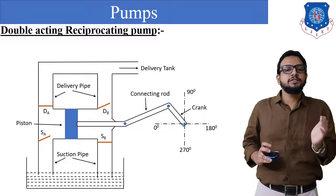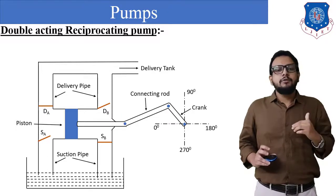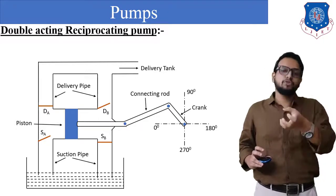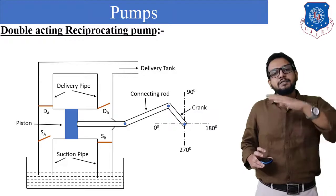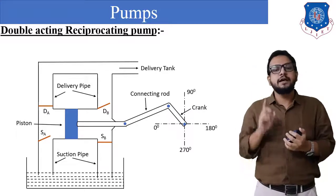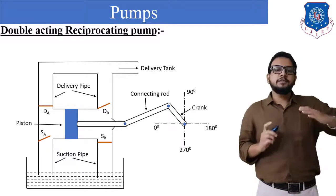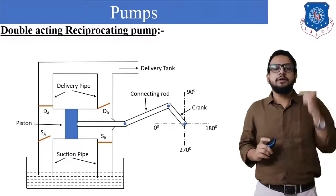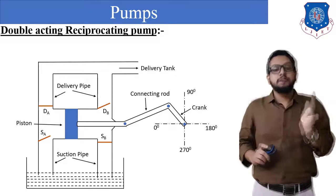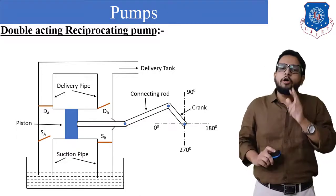On the left side of the piston, a vacuum will be created, whereas on the right side there will be water stored from the previous stroke. At that time, on the right side, valve Db will open due to pressure difference and water will be delivered into the delivery tank. At the same time, on the left side, suction will take place — suction valve Sa will open and water will be lifted up into the cylinder. During this stroke, delivery is obtained from the right side of the piston.